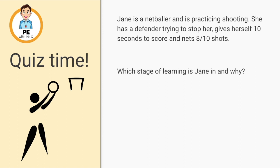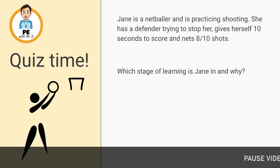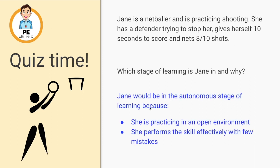Quiz time! Scenario one: Jane is a netballer practicing shooting. She has a defender trying to stop her, gives herself 10 seconds each time to score, and nets 8 out of 10 shots. Which stage of learning is Jane in and why? Pause the video and write your answer. Jane would be in the autonomous stage of learning, because she is practicing in an open environment — there's a defender — and she gives herself a time limit restricting her control of timing. She also performs the skill effectively with only a few mistakes: 8 out of 10 shots going in.